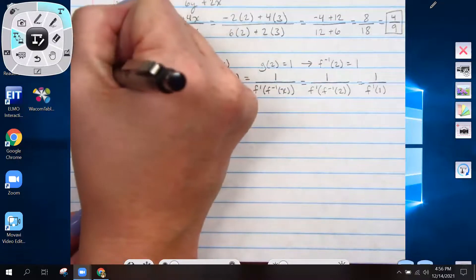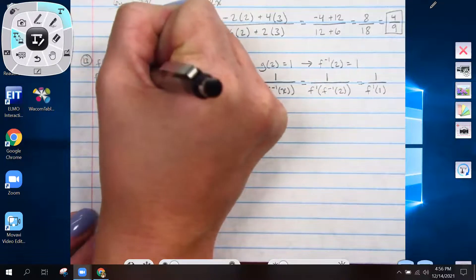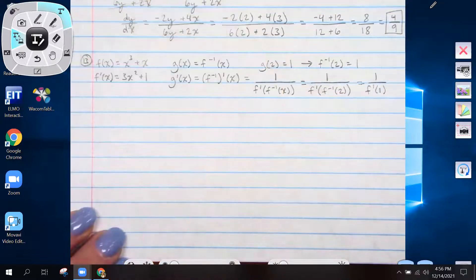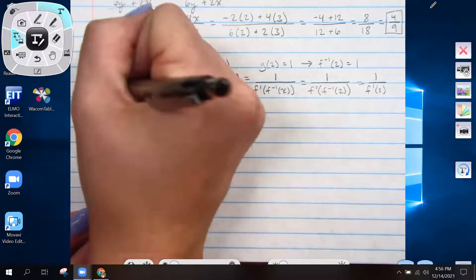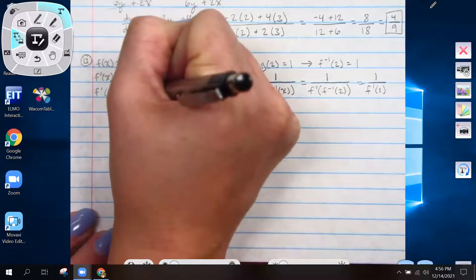So let's take the derivative of f of x to get 3x squared plus 1. And let's find f prime of 1 by plugging 1 in for x.